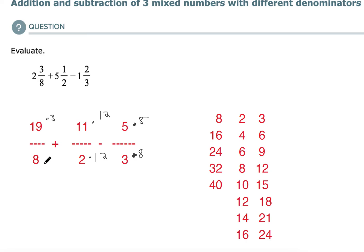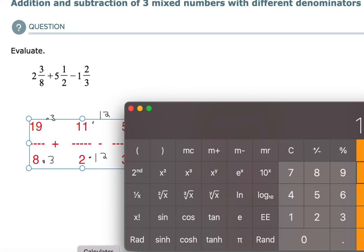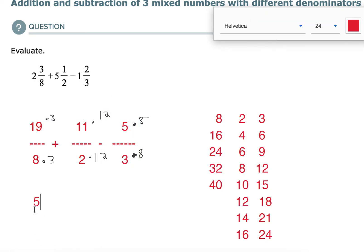And then I'm going to multiply the top and the bottom of this one by 3. And again, I chose 3 because 8 times 3 makes 24. Okay, so let's see, 19 times 3.